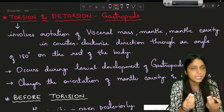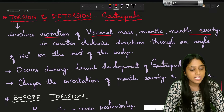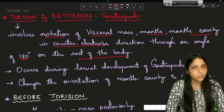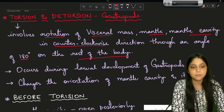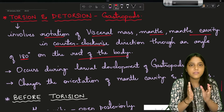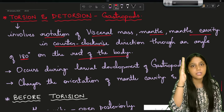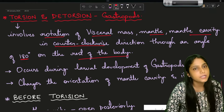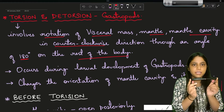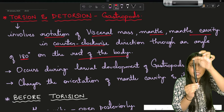Torsion is a process which involves rotation of the visceral mass and mantle cavity in a counter-clockwise direction through an angle of 180 degrees on the rest of the body. This is the definition you will write in your exam. Anti-clockwise direction is the opposite of clockwise direction, and 180 degrees means a half rotation - from a point: 90 degrees is a quarter turn, 180 degrees is a half turn.